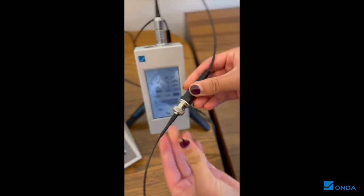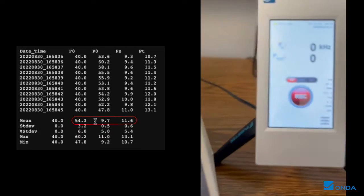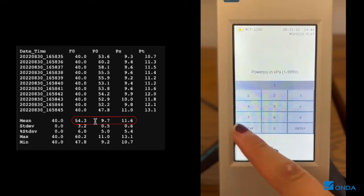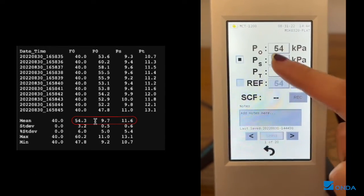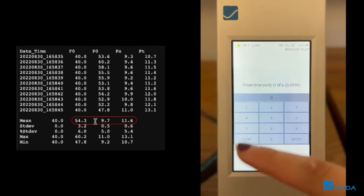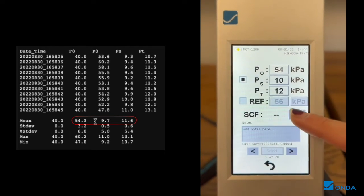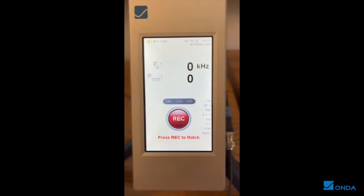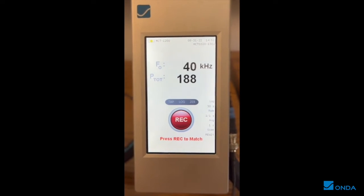Connect the CMS to the MCT1200. Note the average values and input these reference values into the MCT1200. Press Record to generate a Scale Factor.